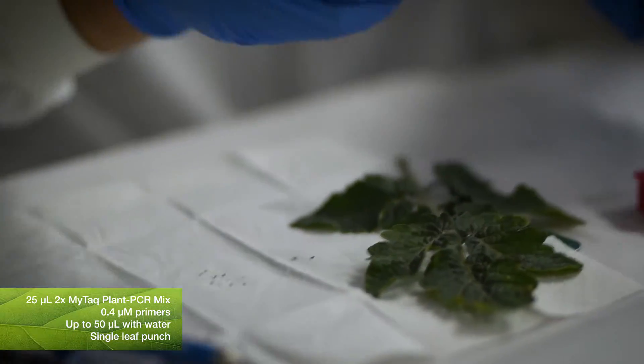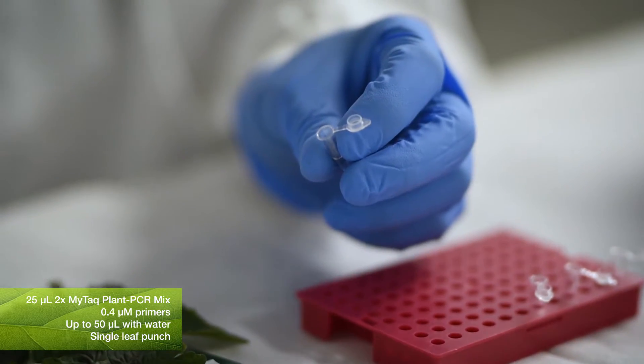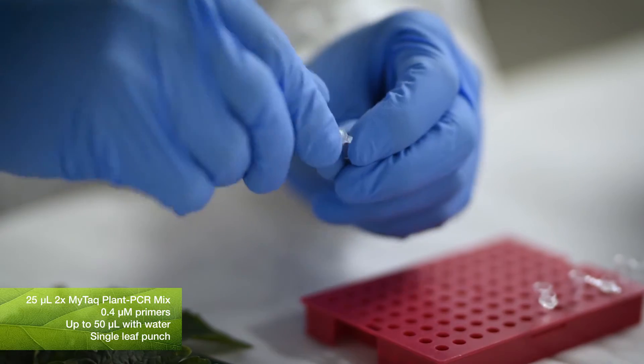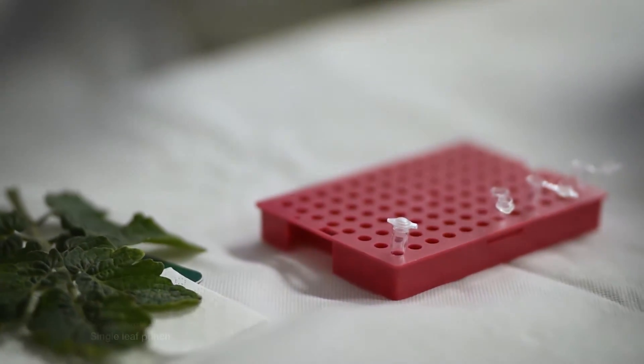Add a single leaf punch. It is always better to add the punch to the tube already containing the master mix as static between your gloves and the plastic tubes can make it tricky to put the sample in.